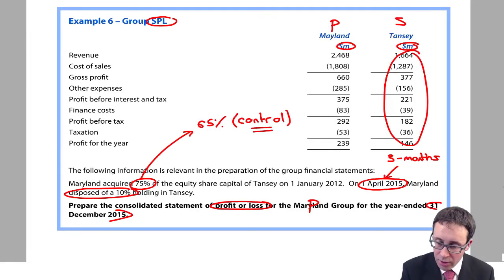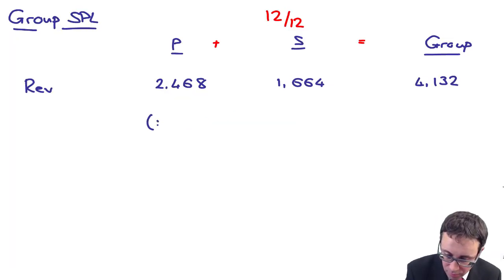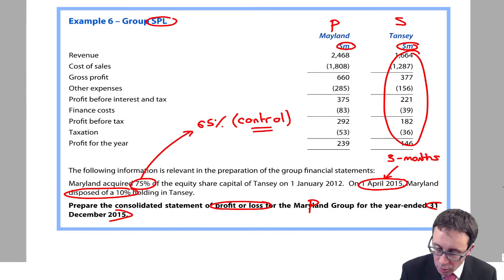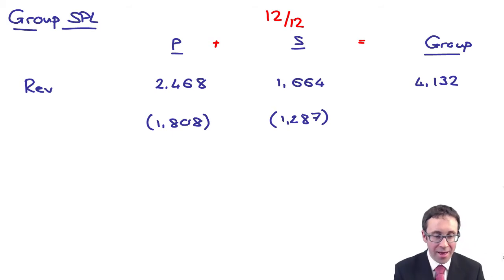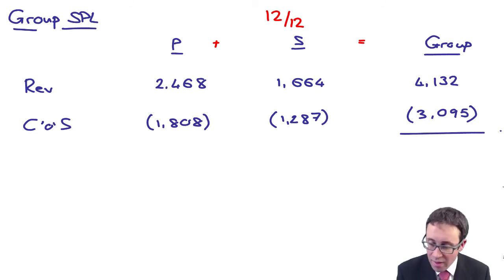I then need to go through there and look at cost of sales. Is it 1808? And 1287, careful, transposition error. If I add them together, I think we get 3095. That's my cost of sales. That then gives me gross profit of 1037.